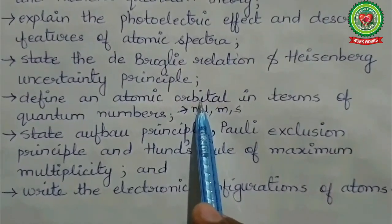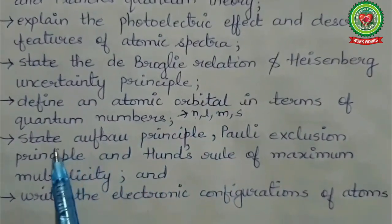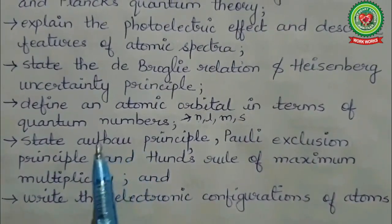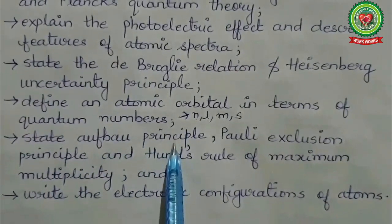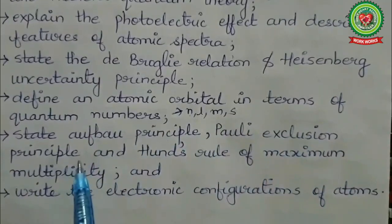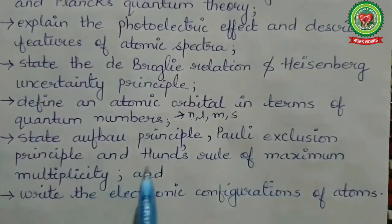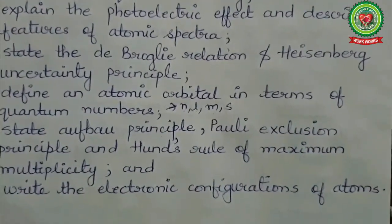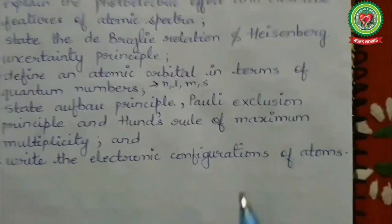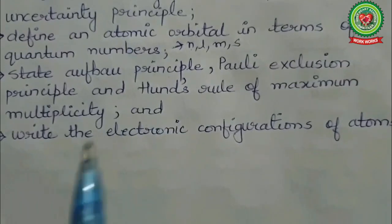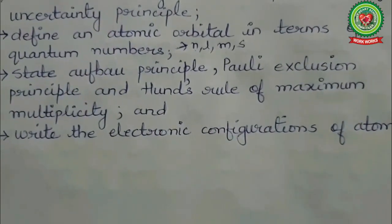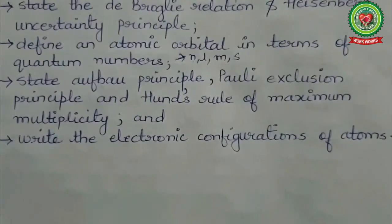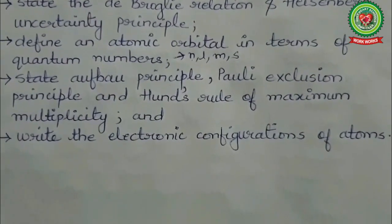To know how to fill electrons in orbitals, we need to know various rules. We need to state the Aufbau principle, Pauli's exclusion principle, and Hund's rule of maximum multiplicity. These rules tell us how the arrangement of electrons should be made when writing an electronic configuration. In class 11, instead of writing 2, 8, 8, 1 in K, L, M, N shells, you will fill electrons in terms of s, p, d, f orbitals.